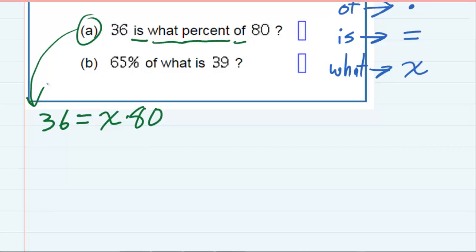And we can then solve that for X. So if I'm solving for X, I would want to get the 80 to the other side. So I'm going to divide both sides by 80. And that will cancel on the right-hand side. I undid the multiplication with division. I now have X equals, and I have 36 divided by 80.